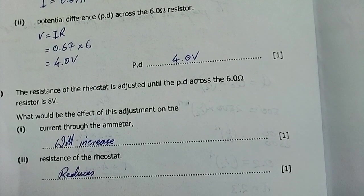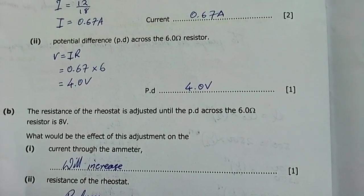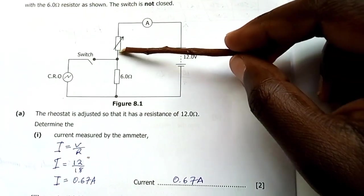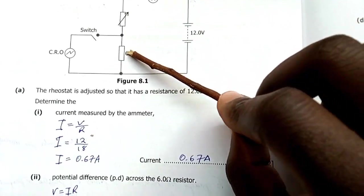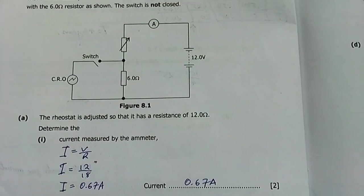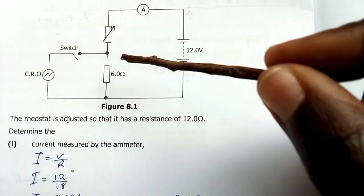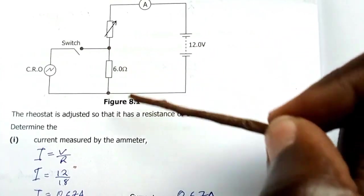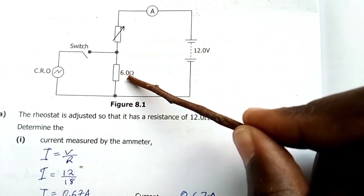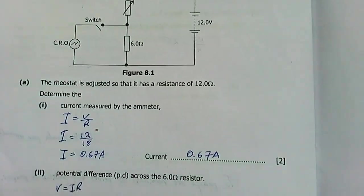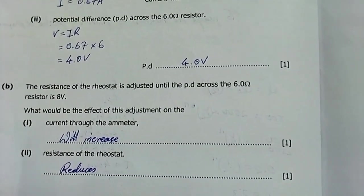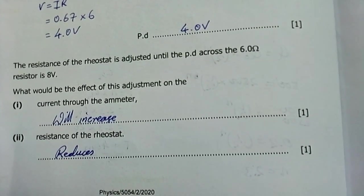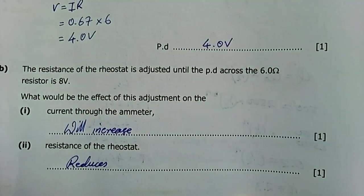Part b: the resistance of the rheostat is adjusted until the PD across the six-ohm resistor is 8 volts. The effect on the current through the ammeter: current will increase because the overall resistance has reduced. Since the resistors are in series, if the PD across the six-ohm resistor increases, the rheostat's resistance has been reduced, meaning less total resistance, so current increases.